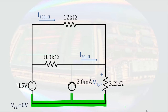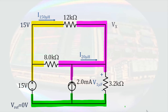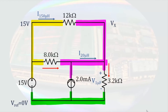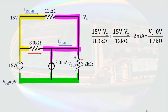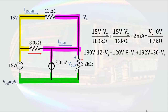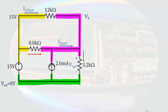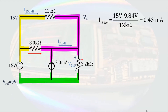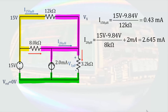If we make the bottom node a reference node defined as 0 volts, then the node above the 15-volt source will be at 15 volts. The remaining node we can call Vx. We assign directions to the currents not already indicated. A single node equation at the purple node would have the current through the 8-kilohm resistor and the 12-kilohm resistor, along with the 2-milliamp source entering the node, while the current through the 3.2-kilohm resistor leaves the node. Multiplying through by 96 kilohms, we determine that Vx equals 9.84 volts. Given Vx is 9.84 volts, the current through the 150-microhenry inductor is 0.43 milliamps, the current through the 20-microhenry inductor is 2.645 milliamps, and the voltage across the 1-microfarad capacitor is Vx.